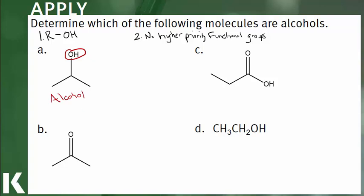Moving on to B, there is no hydroxyl group due to the lack of a hydrogen bound to an oxygen, so we know this is not an alcohol. Additionally, the carbonyl makes this a ketone, which is a higher priority functional group compared to an alcohol.